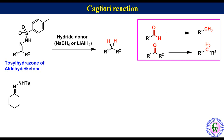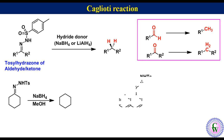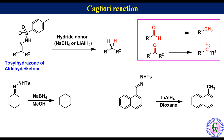For example, reduction of tosylhydrazone of cyclohexanone in the presence of sodium borohydride in methanol gives cyclohexane, and reduction of tosylhydrazone of 1-naphthaldehyde with lithium aluminum hydride in dioxane gives 1-methylnaphthalene.